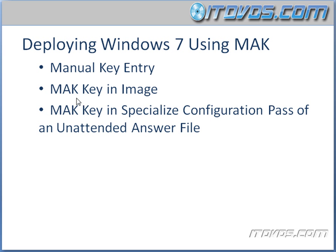We can also add the MAK key to an image. With our reference computer, if we add the MAK key to it and then deploy that image, it will have that MAK key embedded, so other computers will be able to activate using that same key. Additionally, we can use an unattended answer file and add the MAK key to the specialized configuration pass of that answer file. Those are the different ways to deploy Windows 7 using MAK.